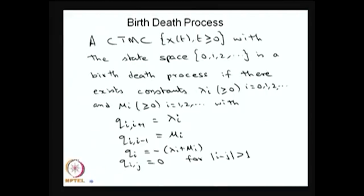That CTMC is going to be called a birth-death process if there exist constants λᵢ's and μᵢ's — these are nothing but the infinitesimal generator matrix elements — where the rate from state i to i+1 is always λᵢ, the rate from state i to i-1 is μᵢ, the diagonal elements are minus of (λᵢ + μᵢ), and all other rates for transitions from state i to state j where |i - j| > 1 are zero. That means the infinitesimal generator matrix is a tri-diagonal matrix and all other elements are zero.